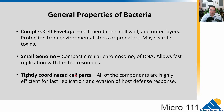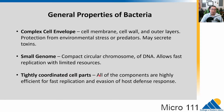Bacteria tightly coordinate their cell parts — all the components inside are super efficient for fast replication. Some bacteria can produce a new generation in 20 minutes. Compare that to us: we have to develop, reach maturity — the earliest reproduction can theoretically happen is in the teens, and then a baby takes nine months to develop. Bacteria are very quick, very fast, very efficient, and can reach super high numbers really quickly. They're also efficient for evading host defense responses — they don't want to get killed by the host.